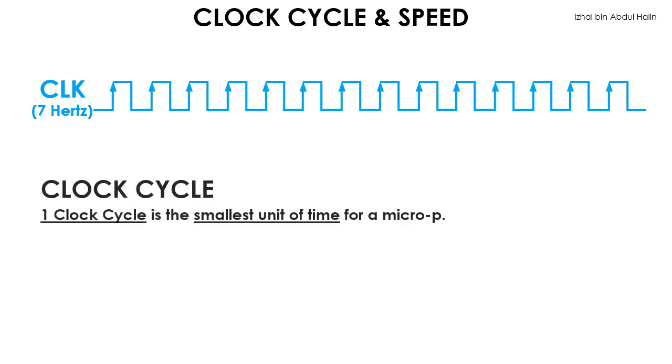A clock cycle is the smallest unit of time that the microprocessor can experience. It is measured in seconds. Take a look at the pulse train again. If this is the main clock signal of a microprocessor, then one clock cycle is here. It is simply the period of one pulse in the pulse train. In this case it is 143 milliseconds.